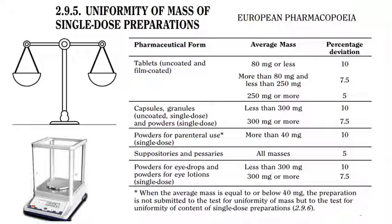An important point is how the limits are applied. If you weigh 20 tablets and the average weight is, for example, 100 mg or 200 mg, you apply the 7.5% limit. Not more than 2 units should fall beyond 7.5%, and no unit should fall beyond twice this limit — that is, 7.5 × 2 = 15%. So no unit should exceed 15% deviation.